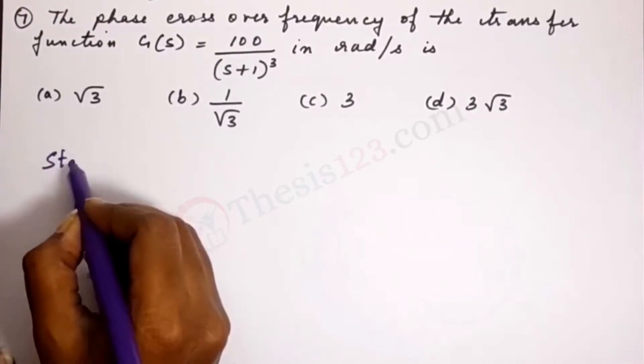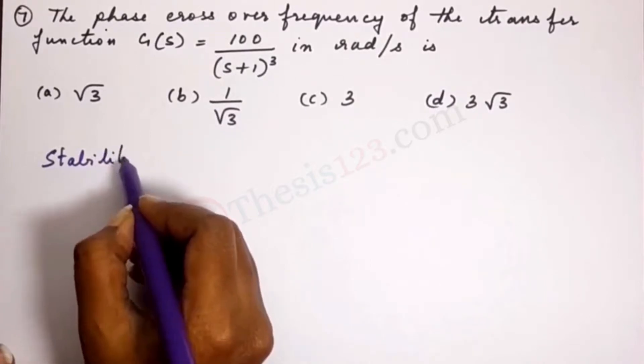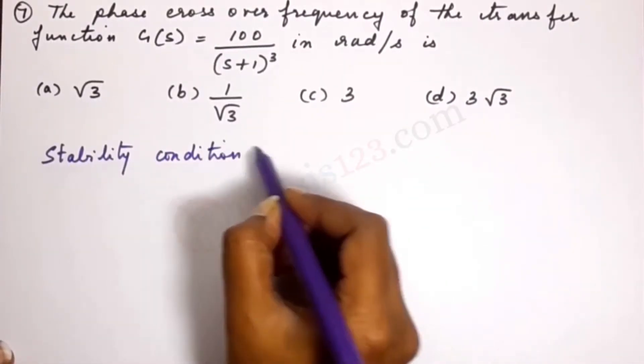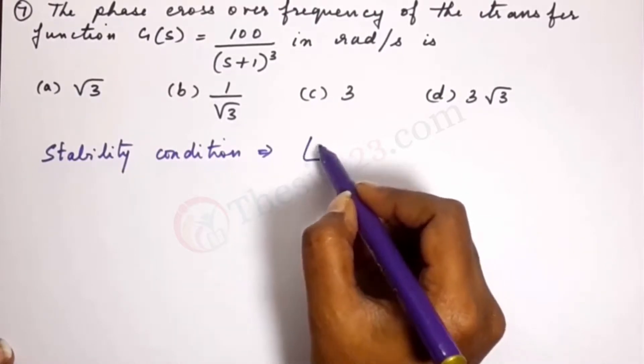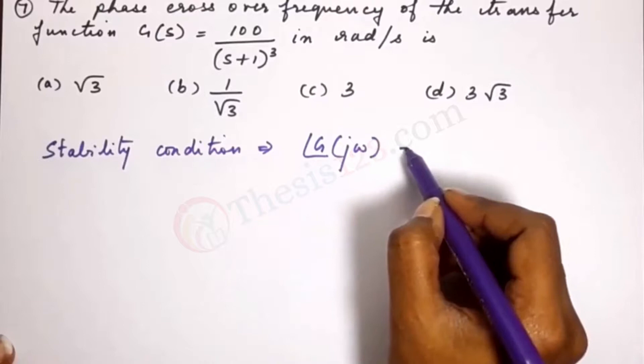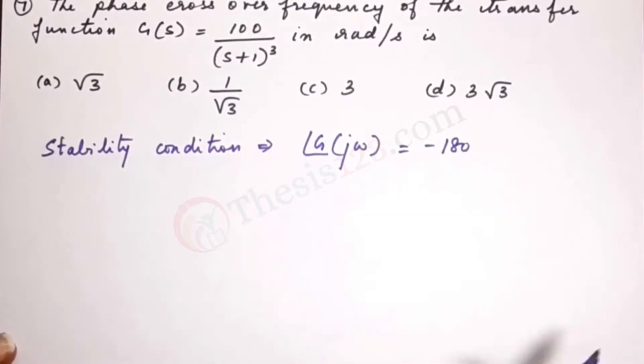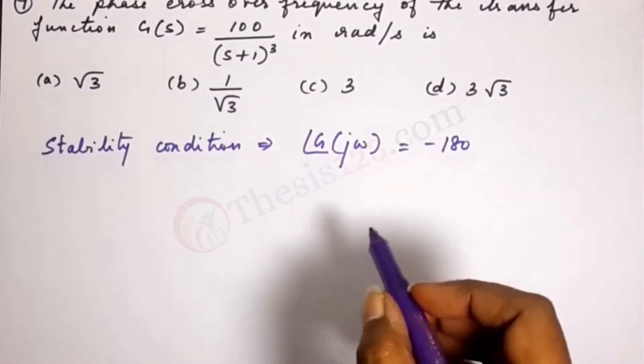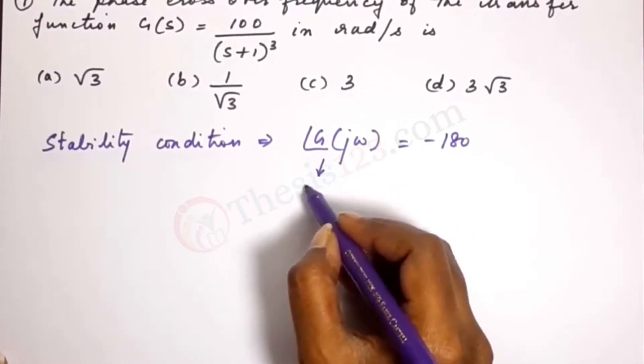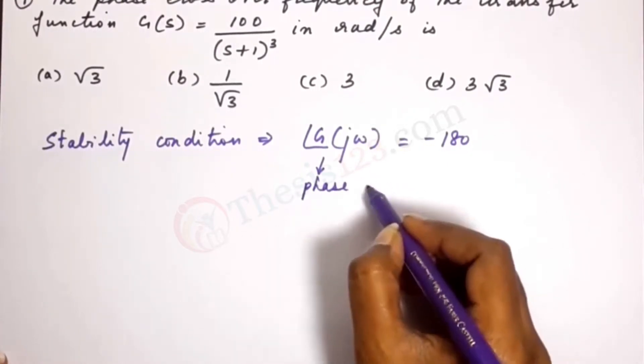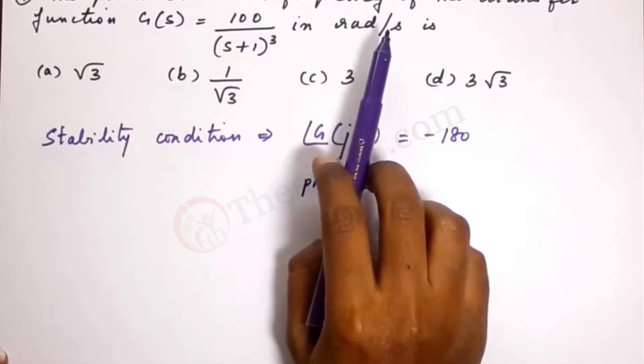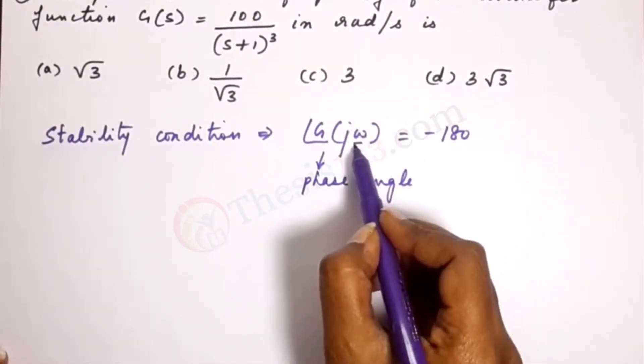So stability condition is given by g of j omega which is minus 180. Now that is standard. So here angle of g j omega is the phase angle. We need to find out what is the phase crossover frequency which is omega.